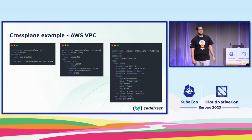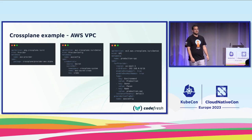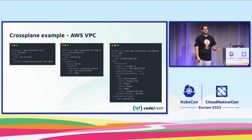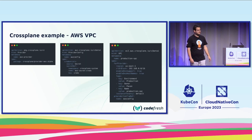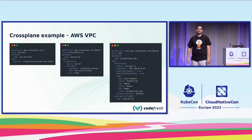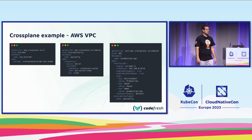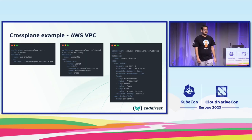Here's a simple example of using Crossplane to provision infrastructure. On the left-hand side we have the provider, which defines we are using the AWS provider. The provider config defines the credentials used to access the AWS API. And the VPC is the actual resource we are going to create — under its spec it has a region, a CIDR block, tags, and so on.